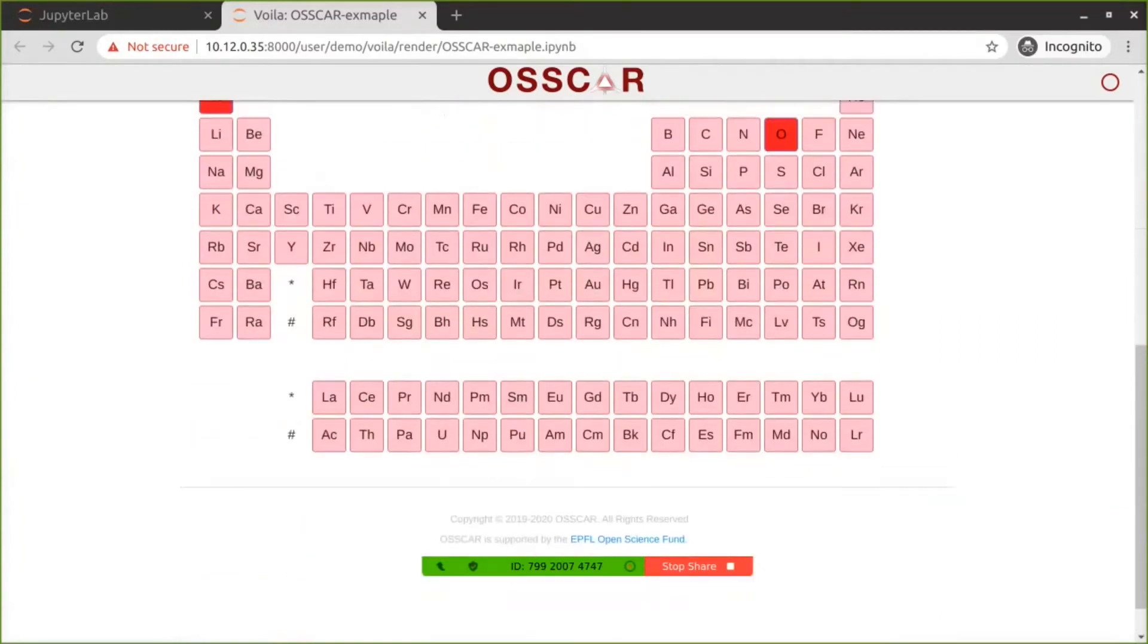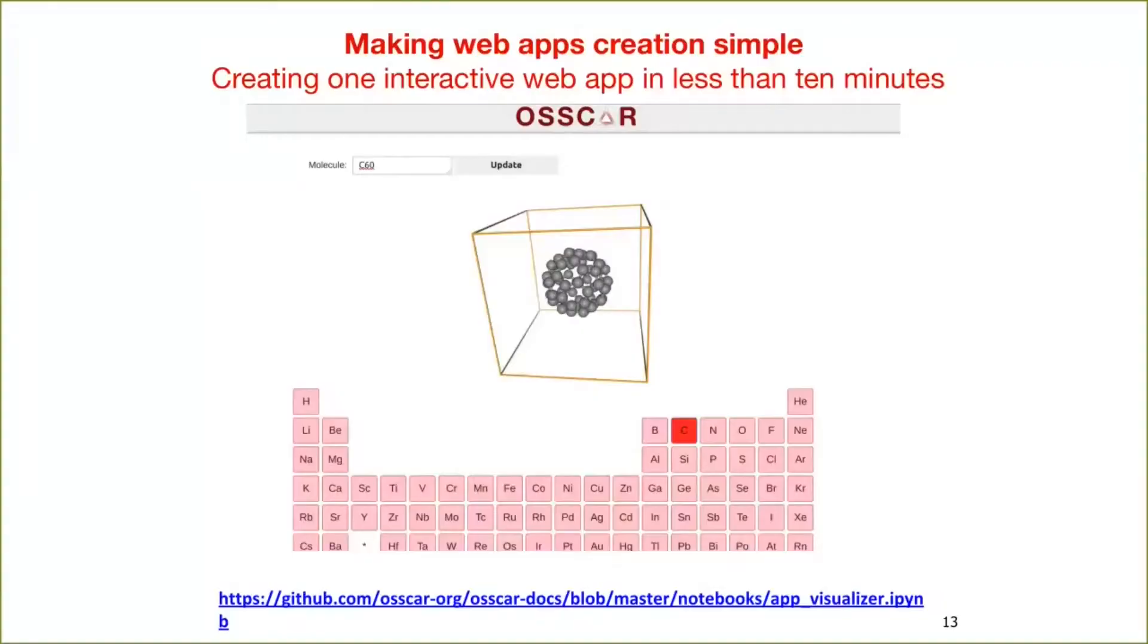In this example, we briefly showed you how we use our widgets and notebooks, Jupyter, and Voila to create web applications. In this example, I ran the web app locally on my laptop. As mentioned in the previous slide, one can create a Git repository and use MyBinder to deploy and distribute the web applications.